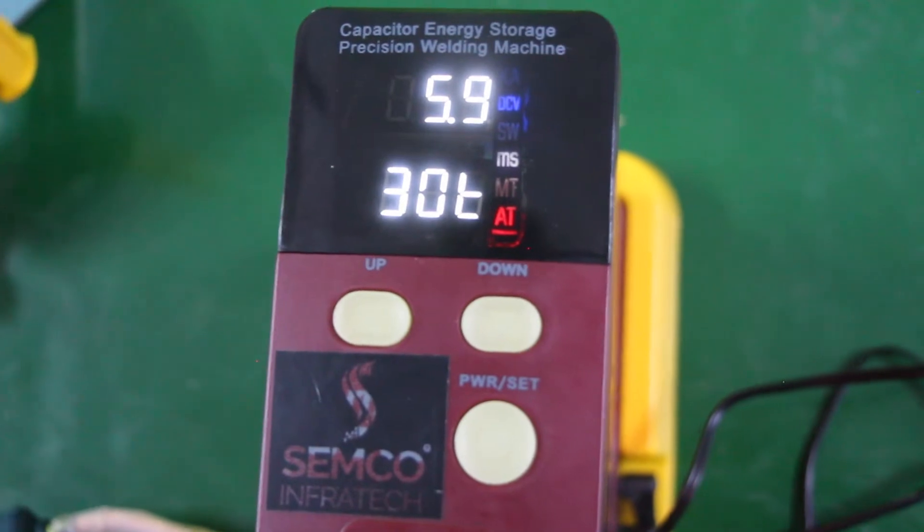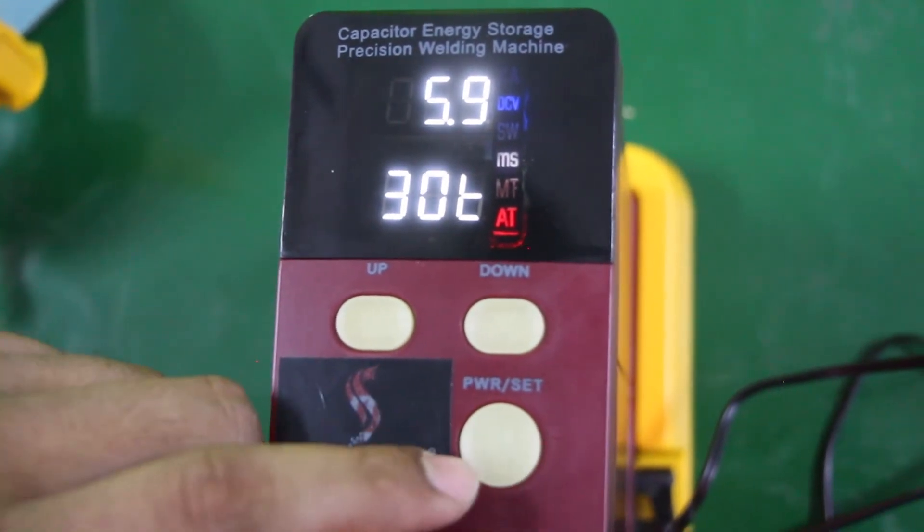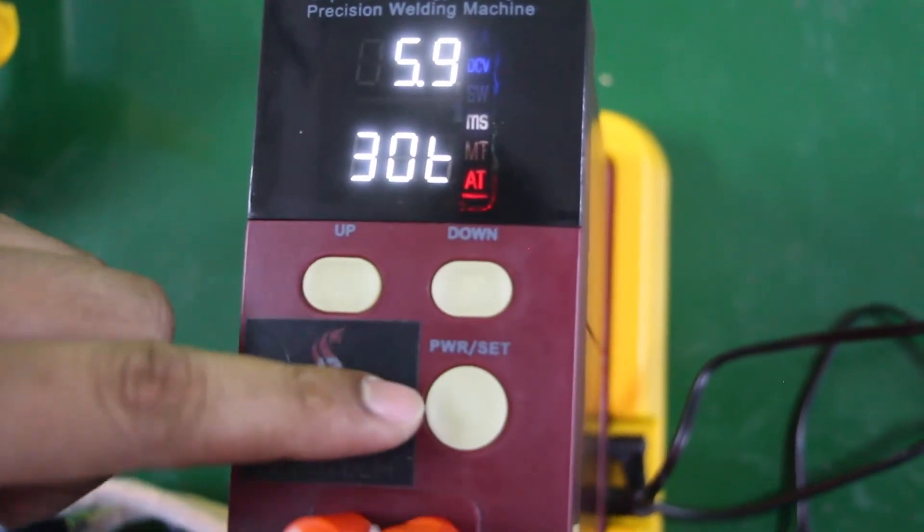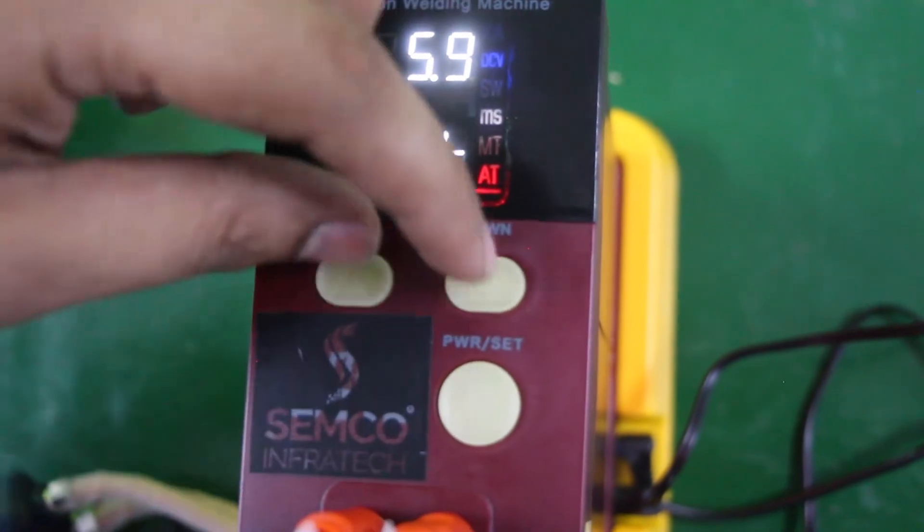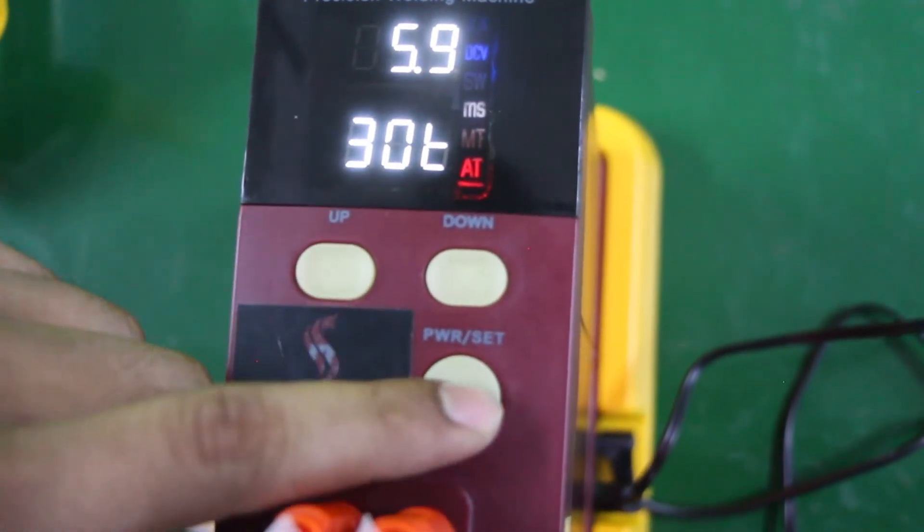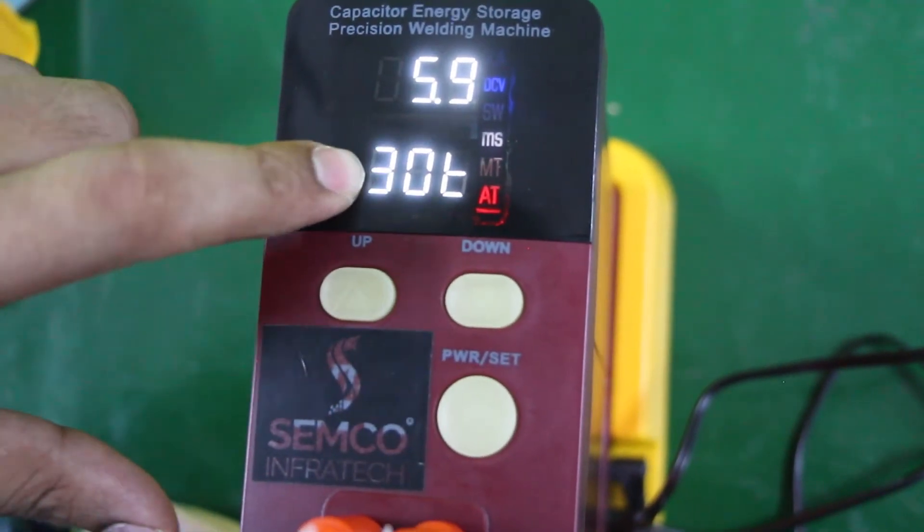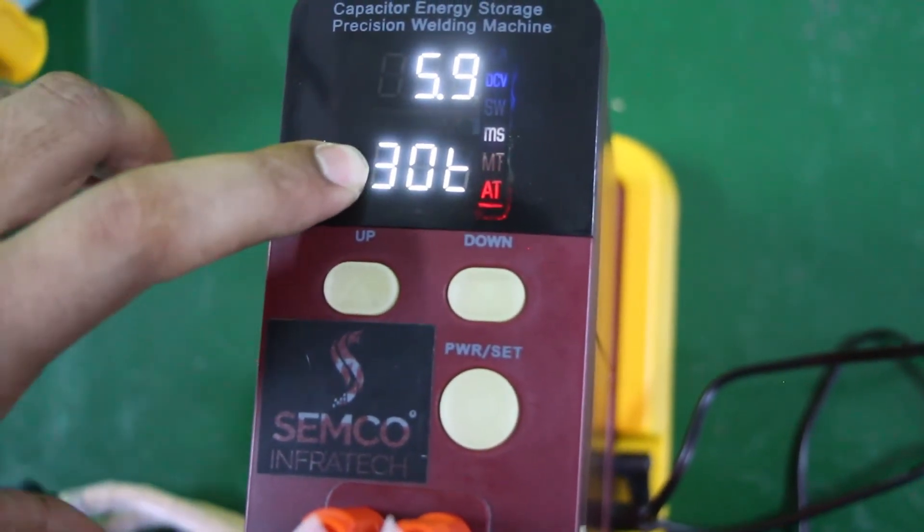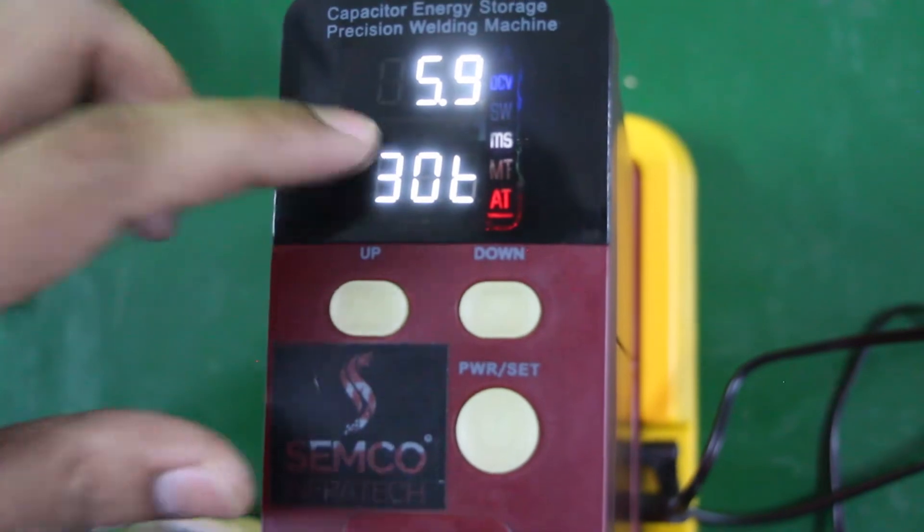Now comes to its working operations. See here we have three buttons. This is a power and set button and these two buttons are for the value up and down. When we press this button you can see that this digit is blinking. Now we can set this value from 0 to 99J for the energy.